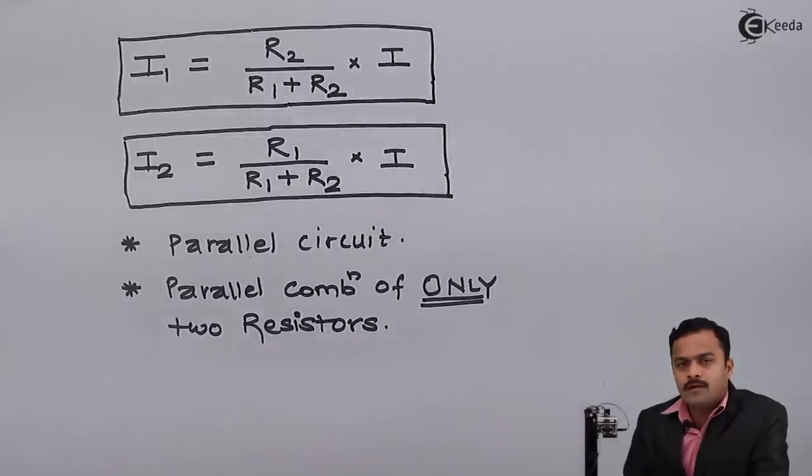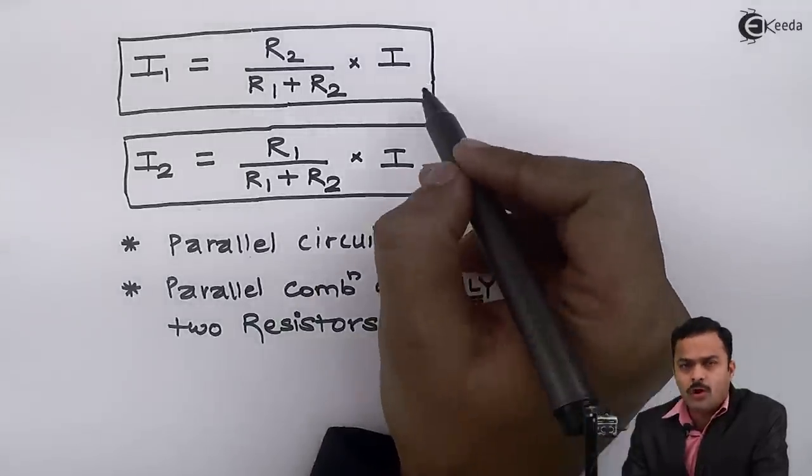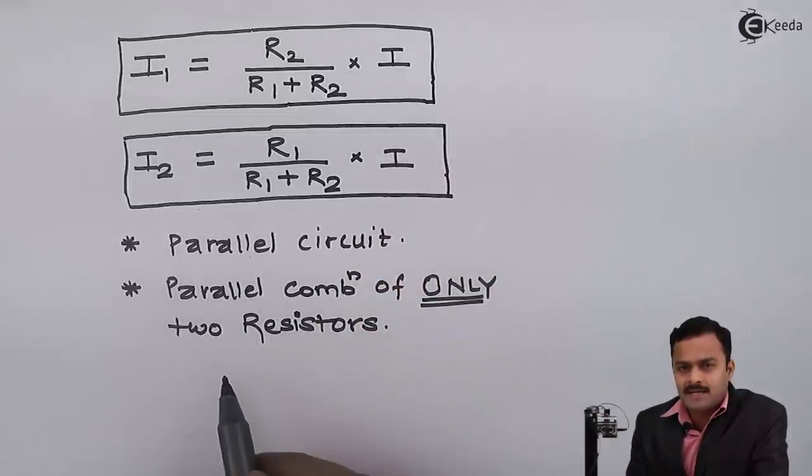So more often while solving the problem we will come across a problem which has one current source and two resistors connected in parallel. By using these two formulae we can get a direct answer of current flowing through individual resistors. Thank you.